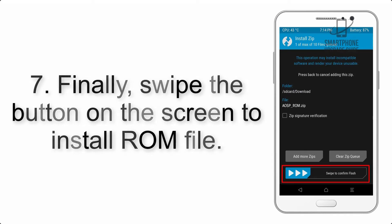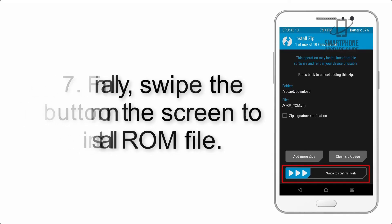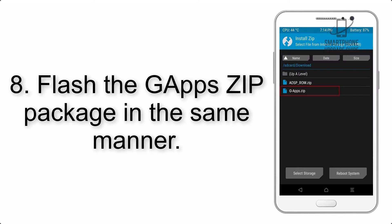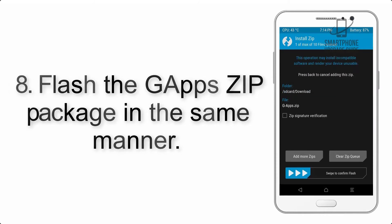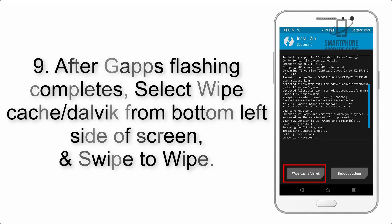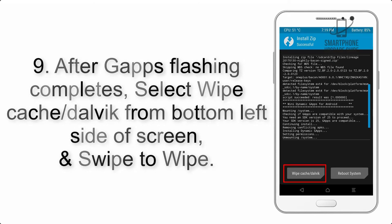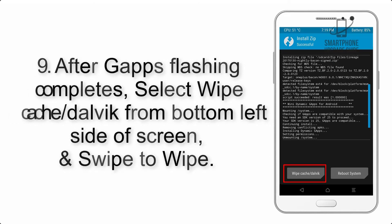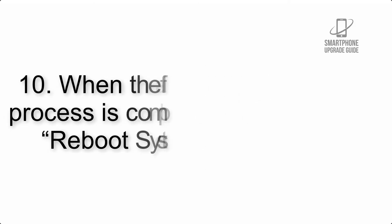Step 7: Swipe the button on the screen to install the ROM file. Step 8: Flash the GApps zip package in the same manner. Step 9: After GApps flashing completes, select Wipe Cache and Dalvik from the bottom left side of the screen and swipe to wipe.